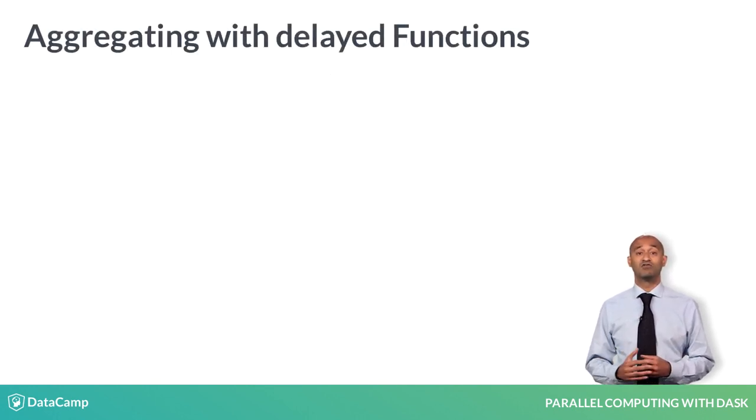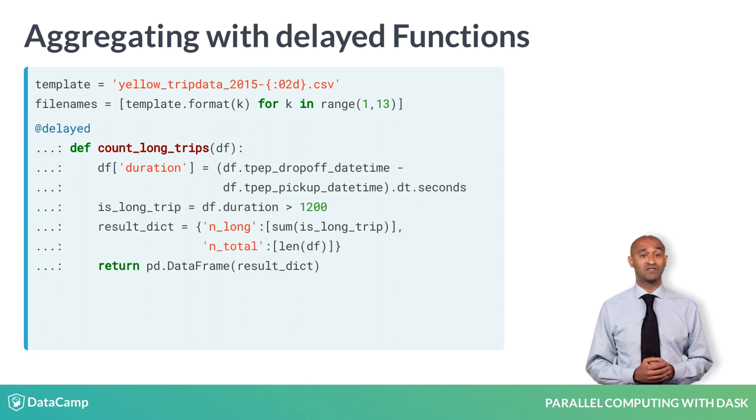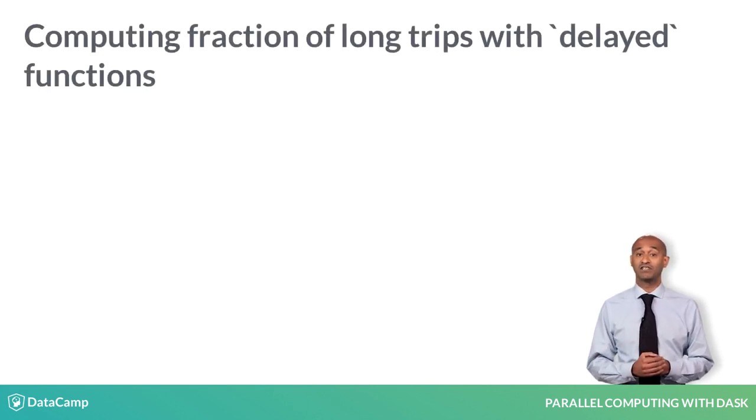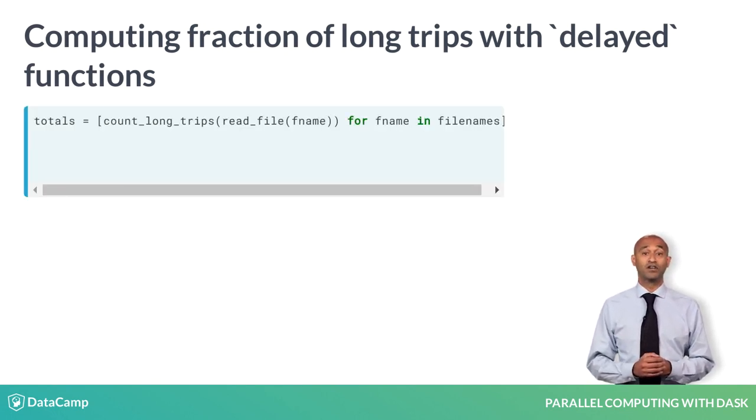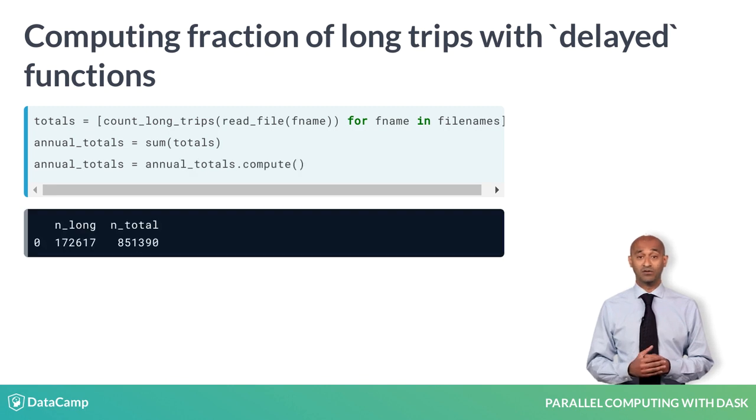To bring this together, let's repeat the yellow cab ride data analysis using Dask instead of generators. As before, we start with a list of 12 file names for the CSV files. We define the function count long trips as before, this time adding the at delayed decorator. We also define a delayed function read file. We construct a pipeline starting with a list comprehension of delayed objects called totals. We accumulate the sum of totals in annual totals. We invoke the compute method of the delayed object annual totals.